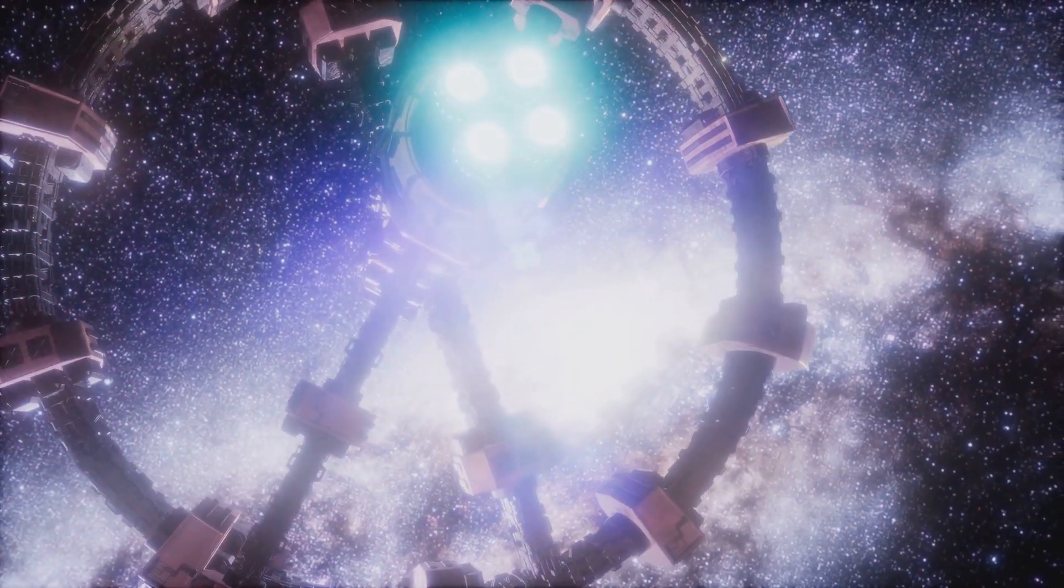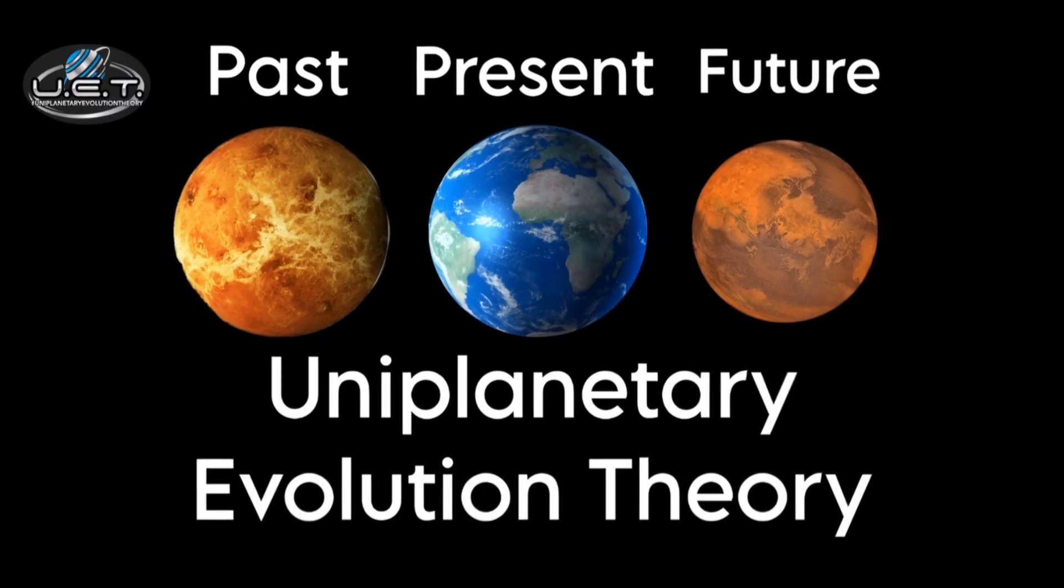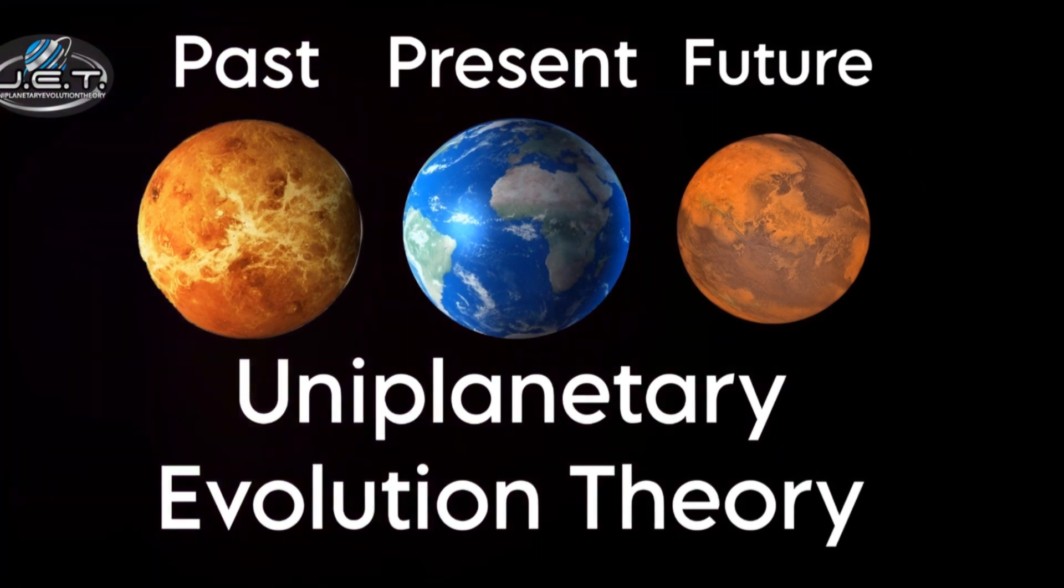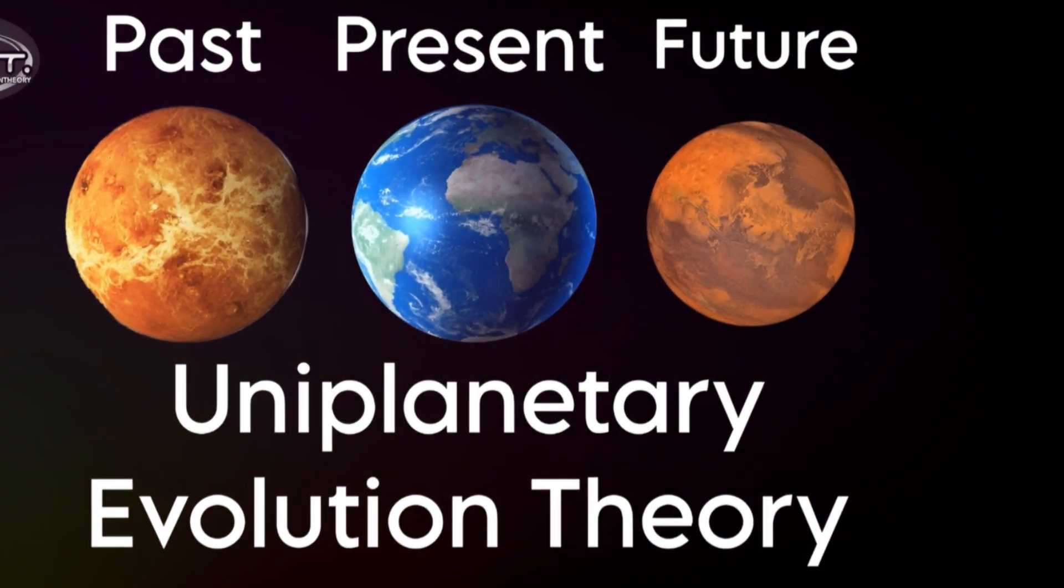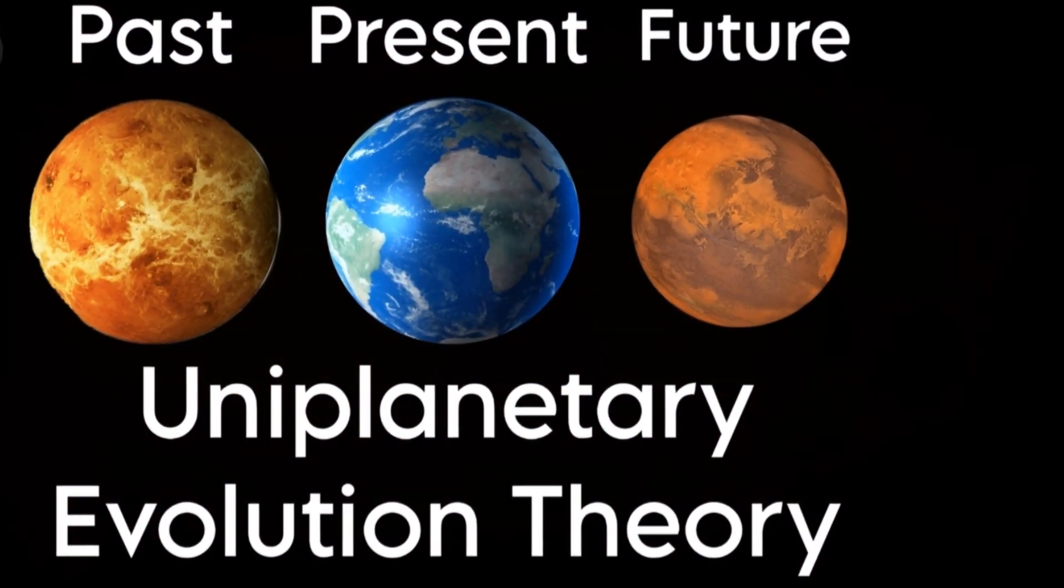Are galaxies alternate realities? The Uniplanetary Evolution Theory provides an intriguing perspective, suggesting that all eight planets in our solar system are actually Earth, but at different stages in time.